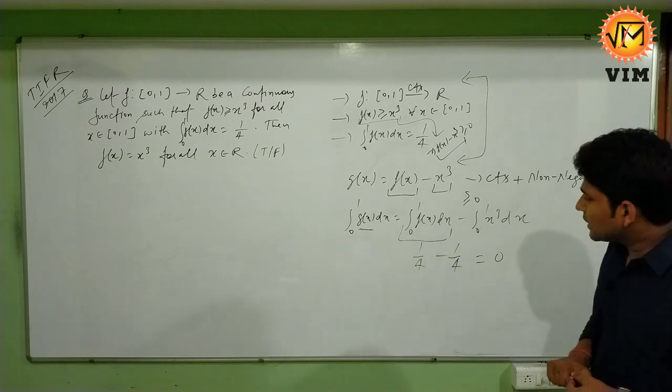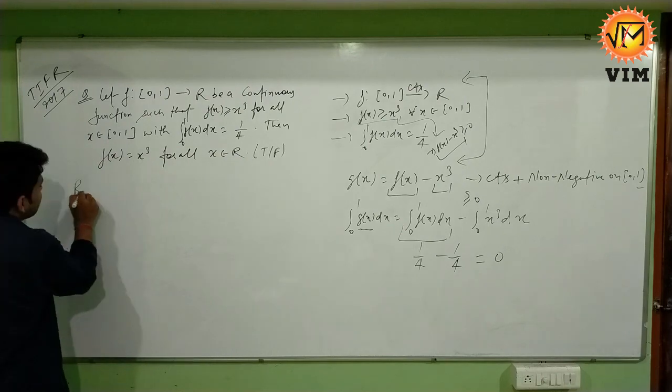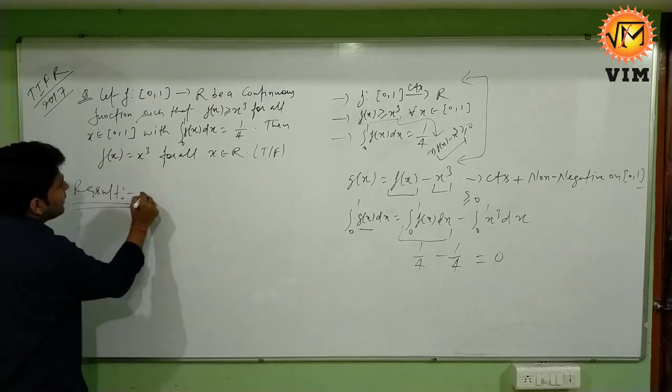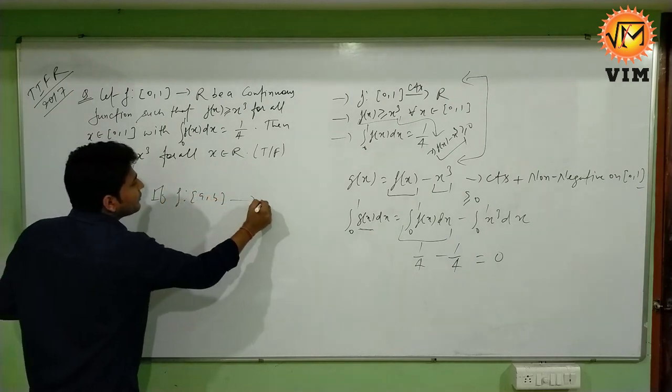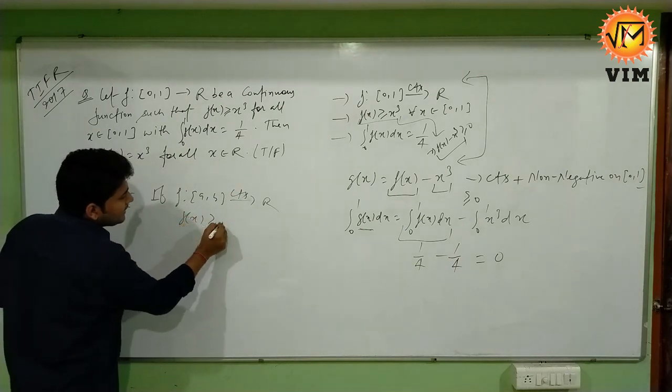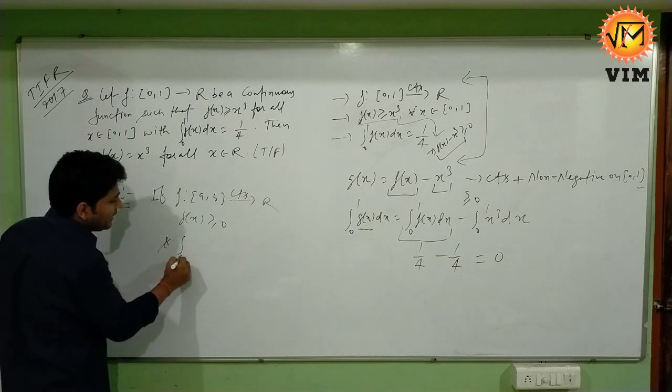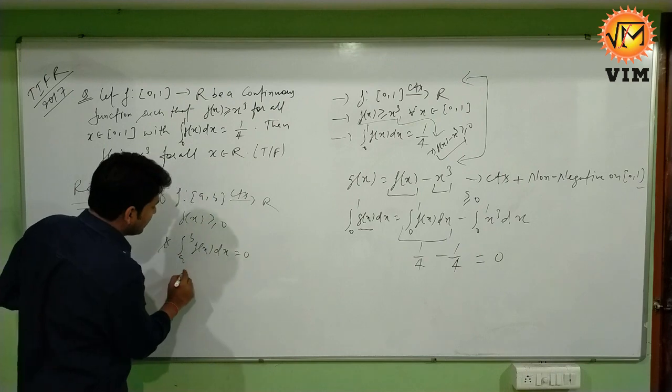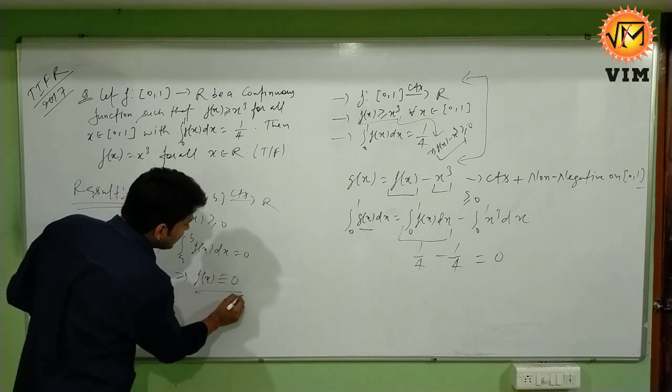So here we can use a result of Riemann integration which says that if f(x) is non-negative and integration from a to b f(x)dx equals 0, that implies f(x) is identically 0.